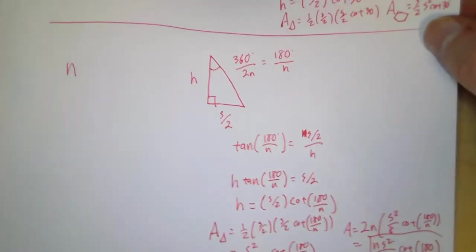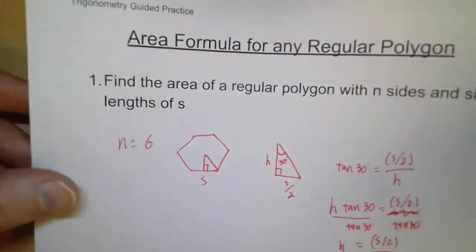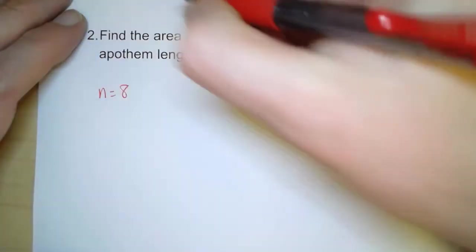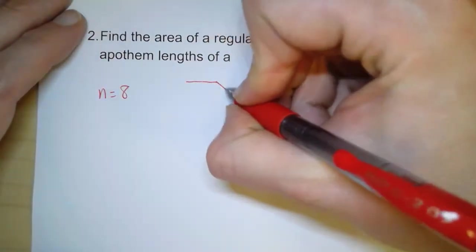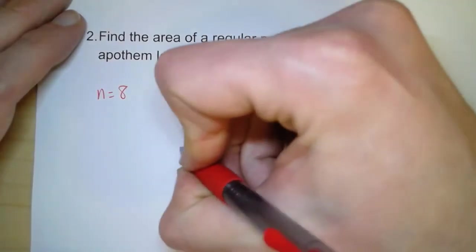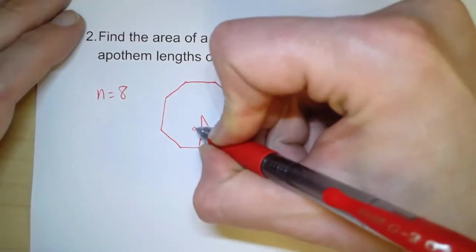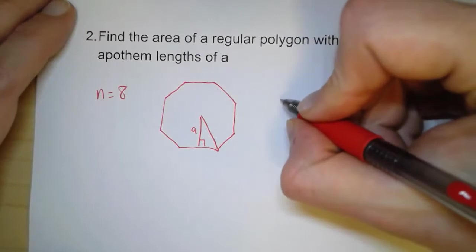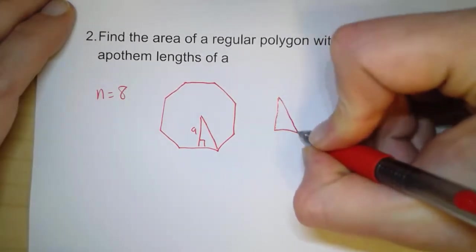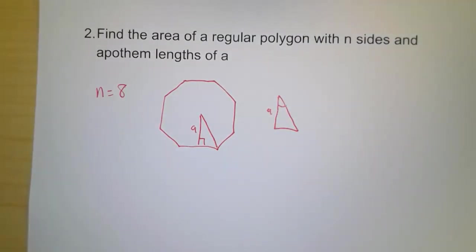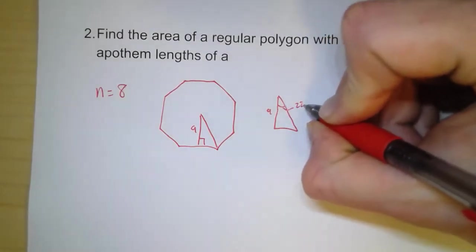Now that's when we are given the side length of the polygon. But in this second example, we're not given the side length — we're given the length of the apothem. Let's try if n equals 8, an octagon. With an octagon we have 8 sides, and when we divide it up we have a as the apothem. That means we have 16 triangles. Dividing 360 by 16 gives us an angle of 22.5 degrees.